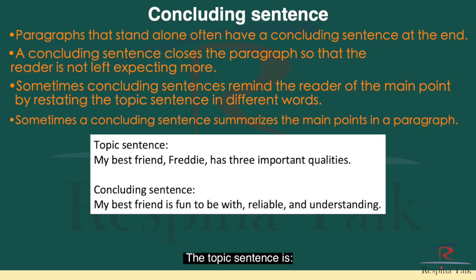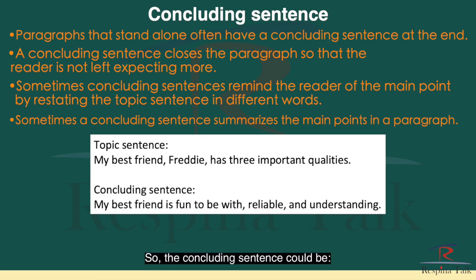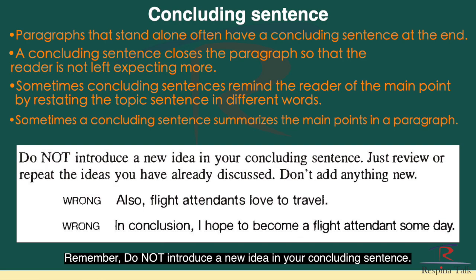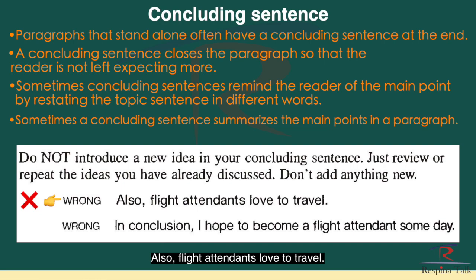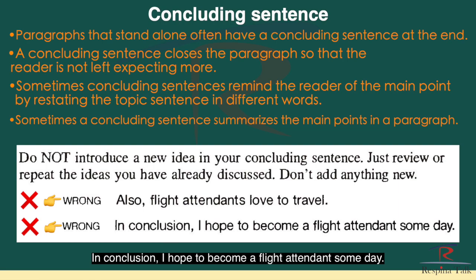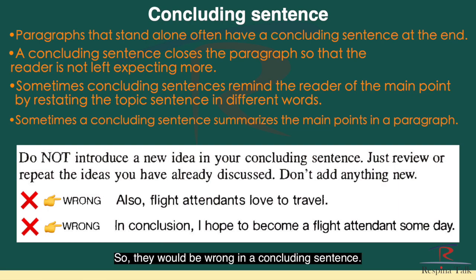Sometimes a concluding sentence summarizes the main points. For example, if the topic sentence is 'My best friend Freddy has three important qualities,' the concluding sentence could be 'My best friend is fun to be with, reliable, and understanding.' Remember, do not introduce a new idea in your concluding sentence — just review or repeat the ideas you have already discussed. So it would be wrong to say 'Also, flight attendants love to travel,' or 'In conclusion, I hope to become a flight attendant someday,' because these are new ideas.